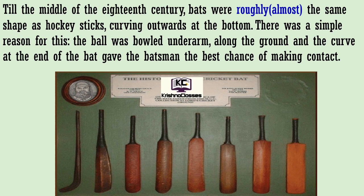There was a simple reason for this. Iska ek bahut simple, bahut sadharan sa karan tha. The ball was bowled underarm along the ground. Underarm bowling ki jaati thi, ground ke saath saath. And the curve at the end of the bat gave the batsman the best chance of making contact. Bat ke aakhir mein jo karv hota tha, jo ghooma hua hissa tha, uski wajah se batsman ko sabse bada mauka milta tha ki woh ball ko bat se takraye aur phir usse aage ki taraf fhaink sake.